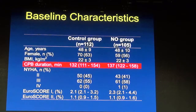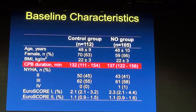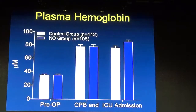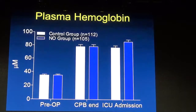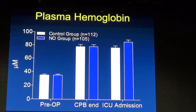Our scores were low, showing these patients had no other comorbidities. We found that plasma hemoglobin — the level of hemolysis — was similar in both groups before and after cardiopulmonary bypass.